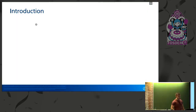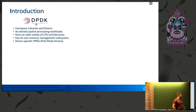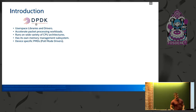Most of you probably know what DPDK and AF_XDP are. For those of you who don't, we'll do a quick introduction. DPDK is a set of user space libraries and drivers. They aim to accelerate packet processing workloads and they run on a variety of CPU architectures. DPDK supports many different PMDs — they're usually device-specific — and DPDK has its own memory management system.